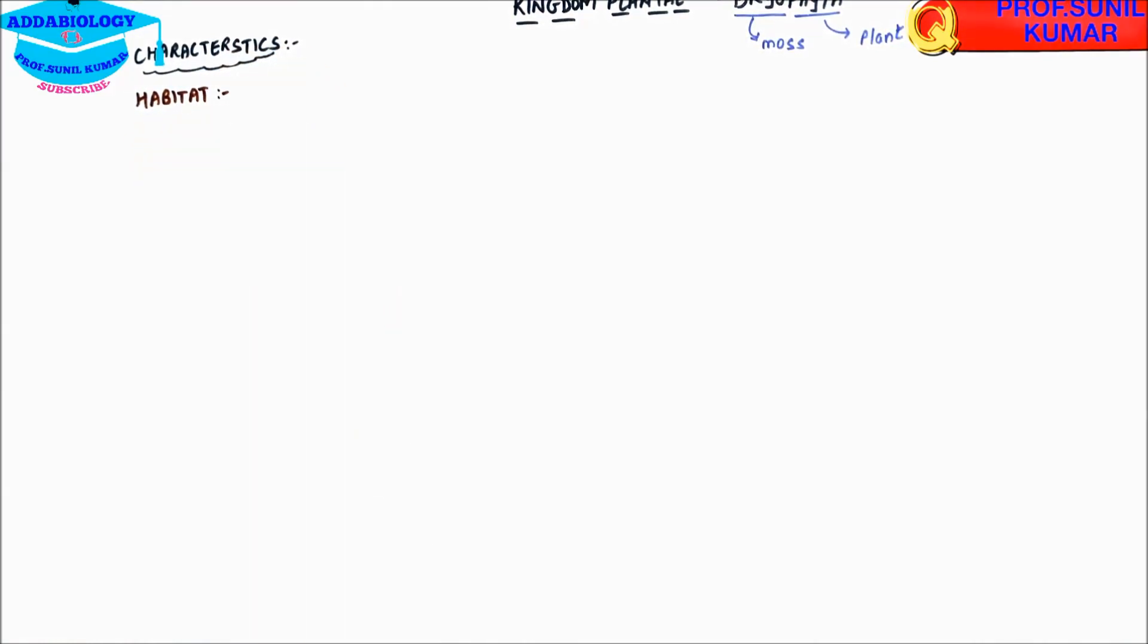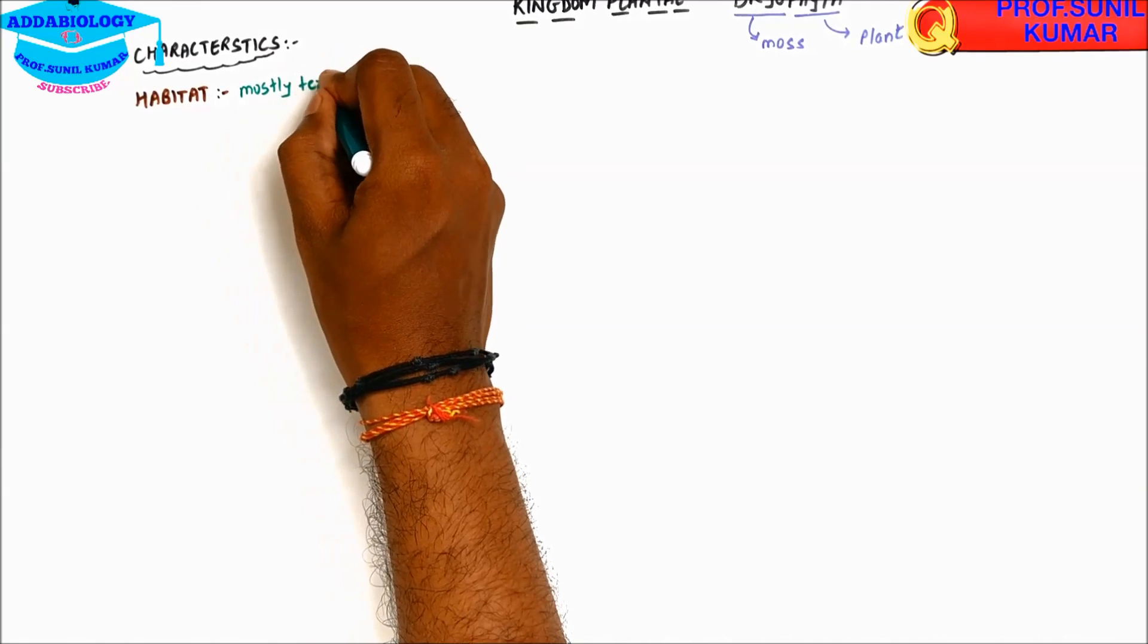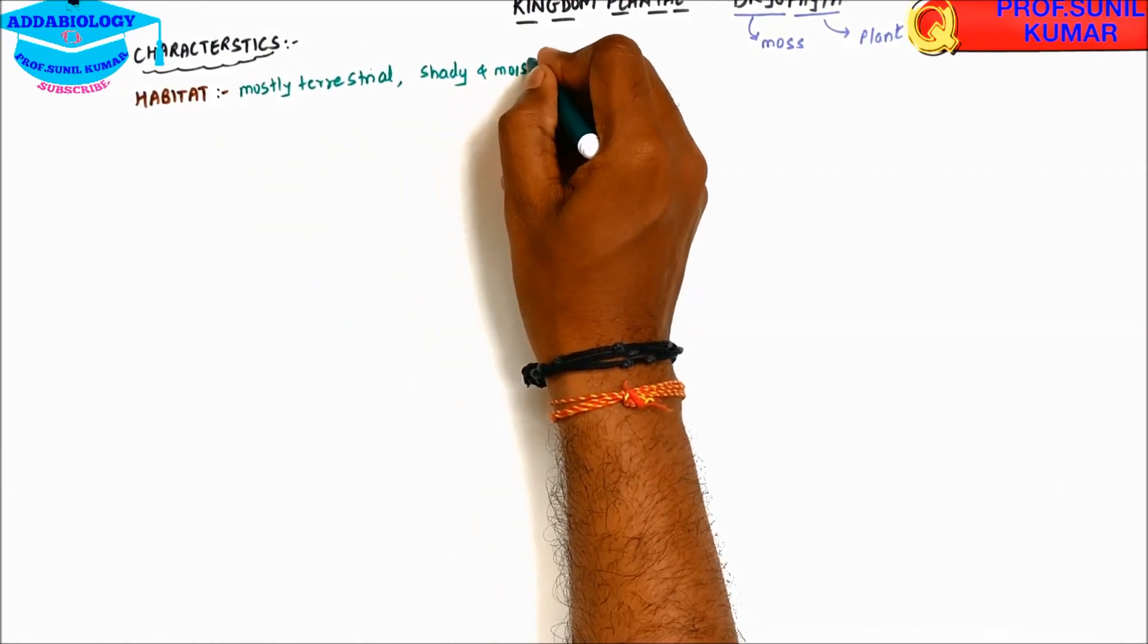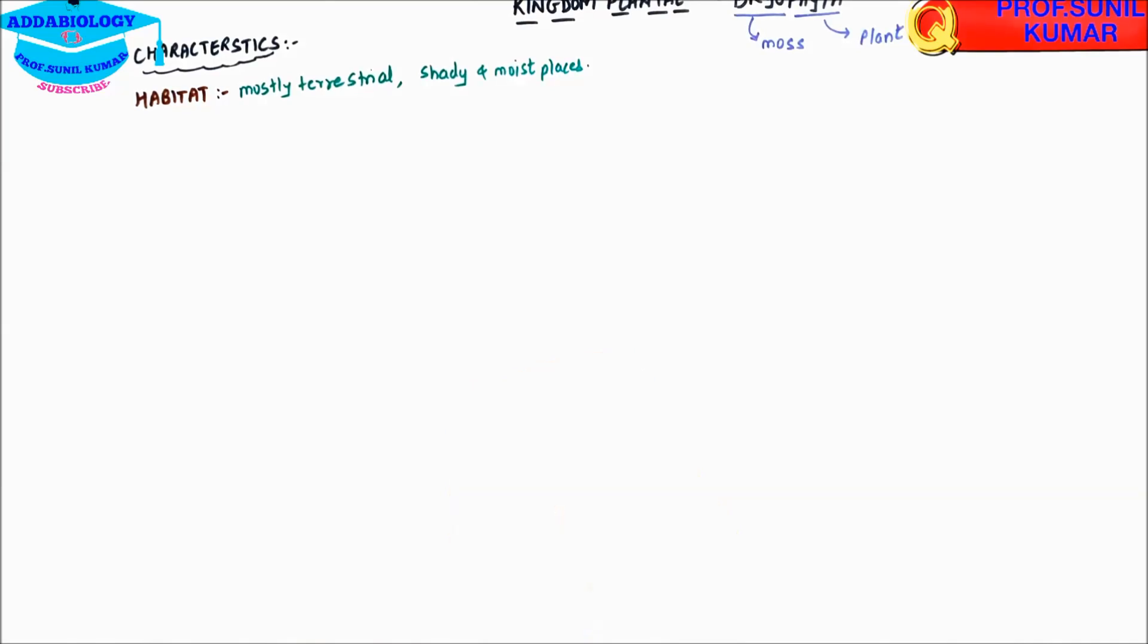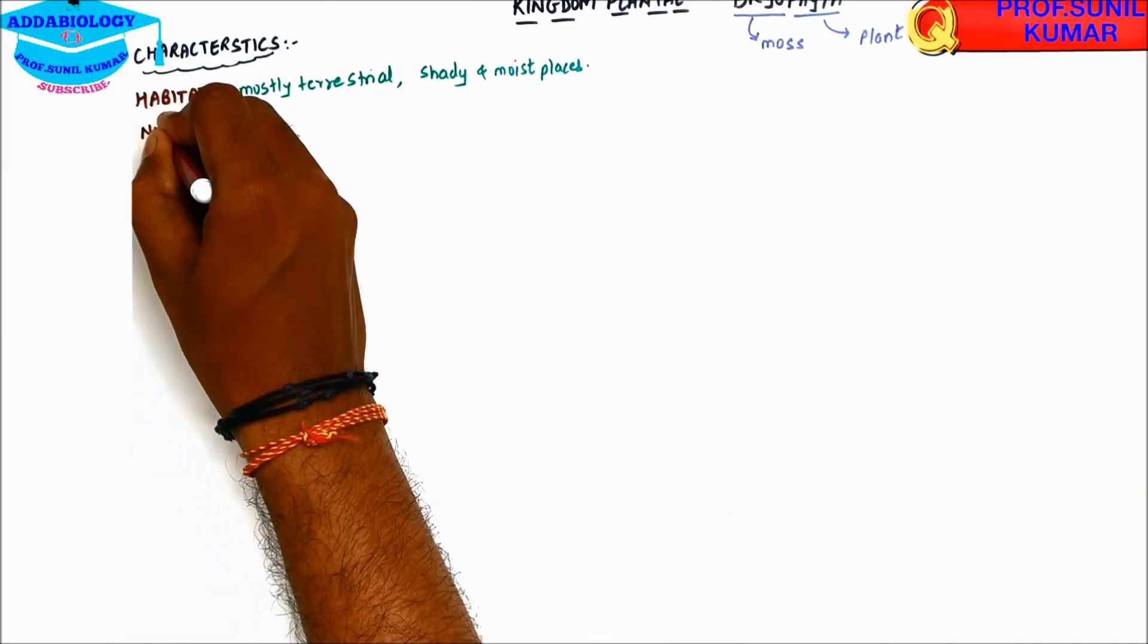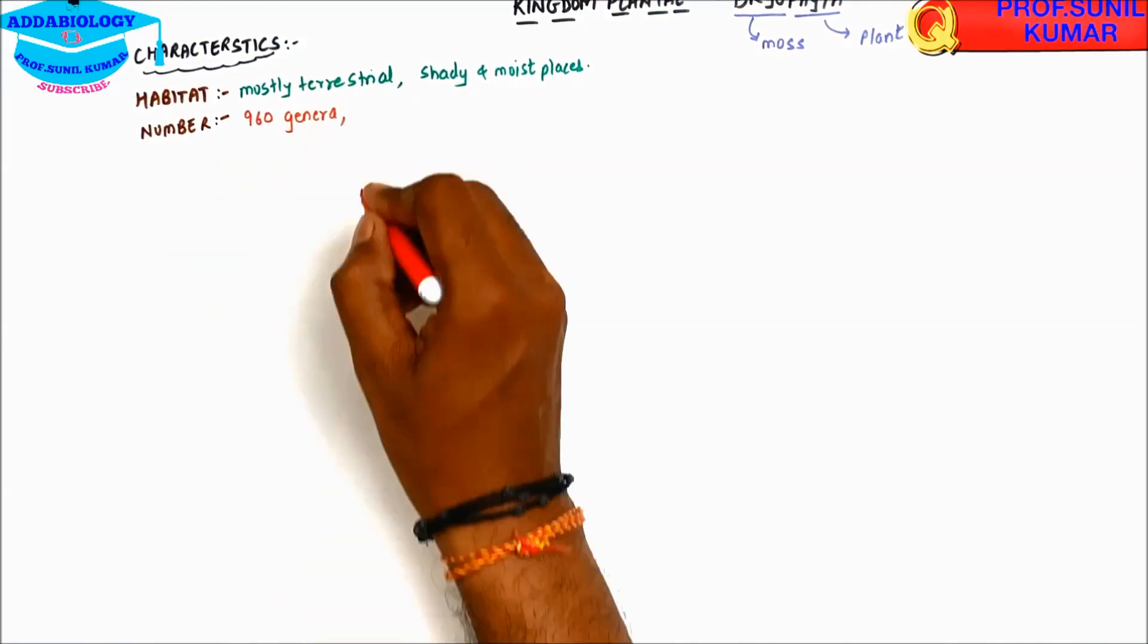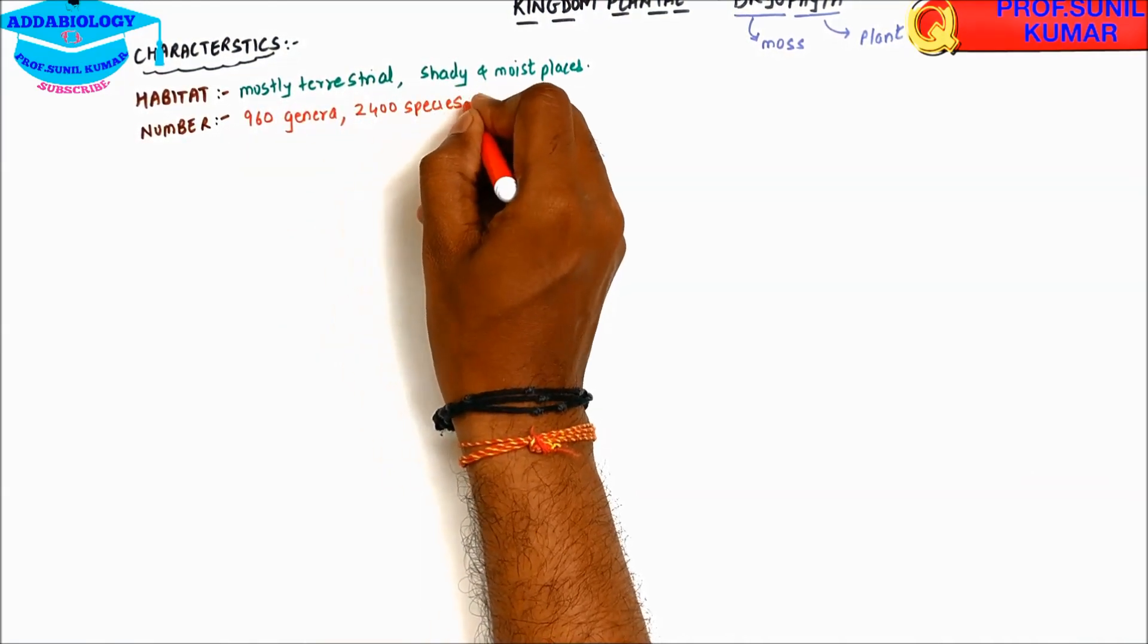All the bryophytes are mostly terrestrial. They prefer shady and moist places. When we talk about numbers of bryophytes, we need to know that there are total 960 genera and 2400 species of bryophyte on this earth.